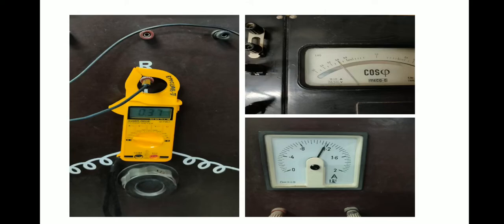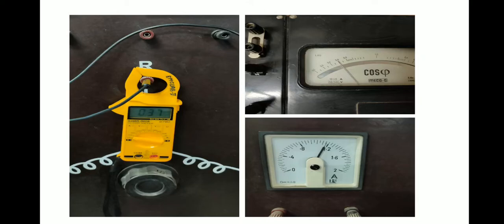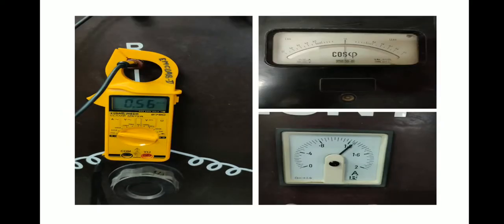Now if I want to increase the power factor what I need to do is I need to increase my excitation. So by increasing the excitation current which was initially below 1.2 amperes, now it has just rose over 1.2 amperes. You can see the stator current has also increased to 0.56. Now the increase in the field excitation has raised my power factor from 0.8 lagging to 1.